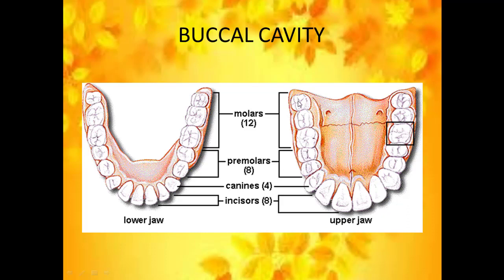Behind the premolars you have the molars. They have a larger surface area which is again used for chewing and grinding the food materials. There are six molars present in each jaw and in both jaws you have around 12 molars. Children, these permanent teeth cannot be replaced, so immense care should be taken in maintaining the permanent teeth.